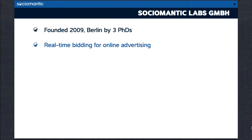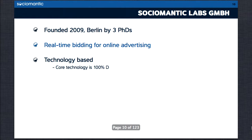There are three things about Sociomantic that make us an ideal showcase for D. Firstly, although we're in advertising, we are not an advertising company — we're a tech company. Sociomantic is not an advertising company that has realised it needs to learn about technology. Rather, the company began with technology developed during the founders' PhD programs, and they realised it was a perfect match for the brand new real-time bidding industry. The technology is based on D.